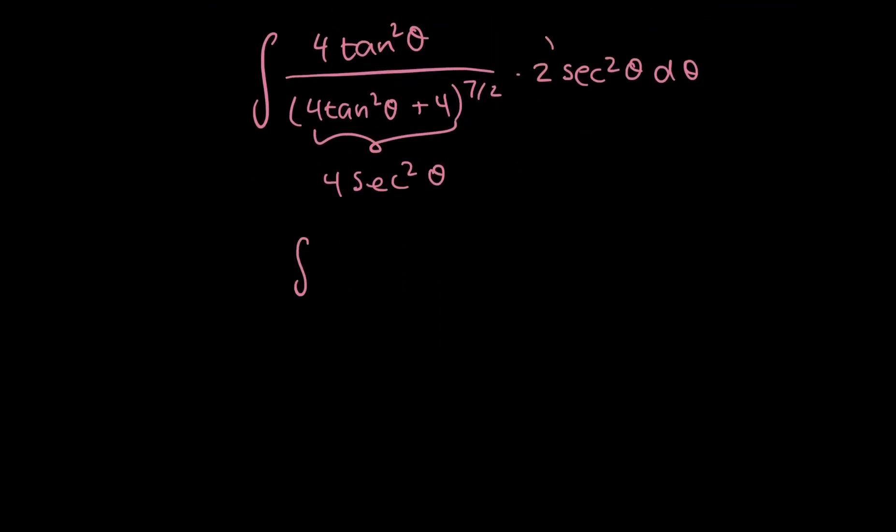So when I rewrite this again, I'm going to take this up here so that I have 8 tan squared theta times secant squared theta over 4 secant squared theta raised to 7 over 2 d theta.